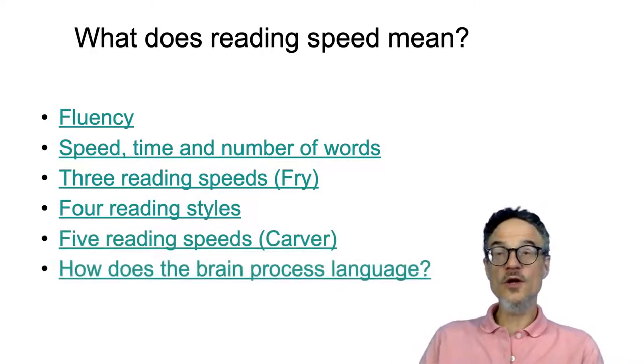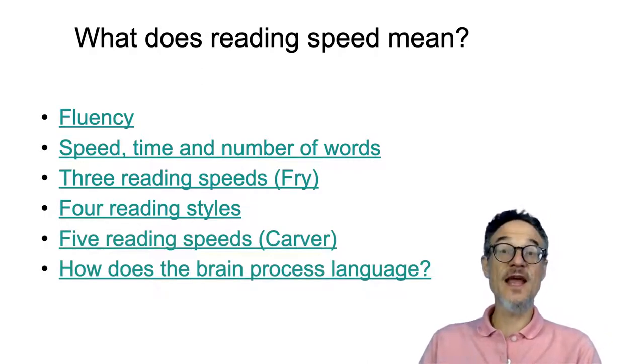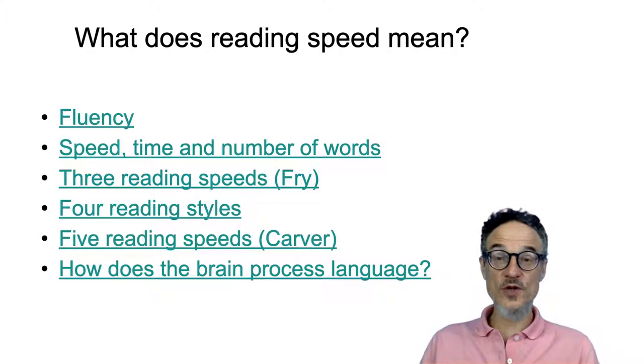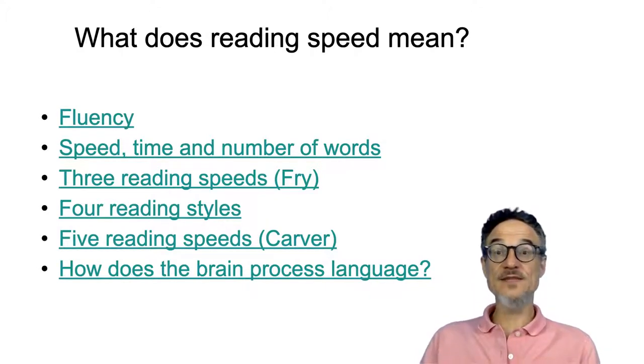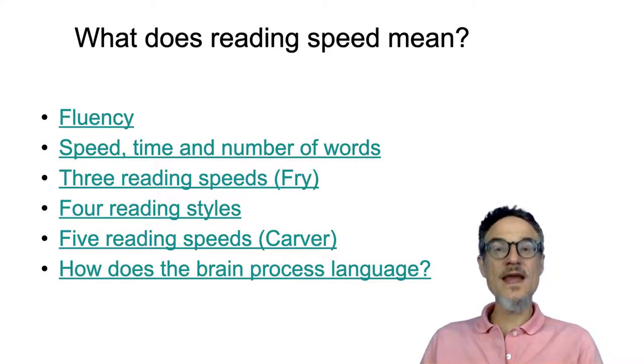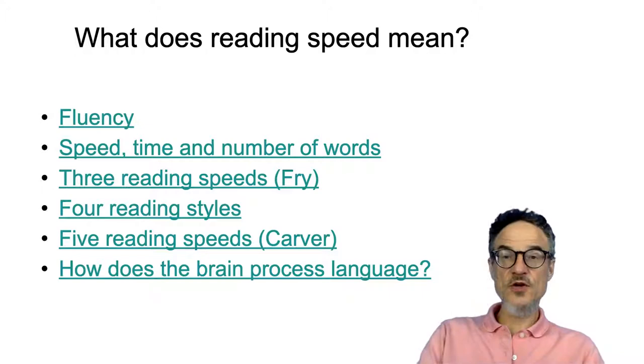We can look at three different reading speeds. A researcher called Frye suggested that there are three different speeds that we can read at. There's also four different reading styles, which I think we've talked about before. There are five reading speeds according to Carver, and we can also look at the brain and how the brain processes language and what that might mean for reading speed. But first of all, let's look at fluency.